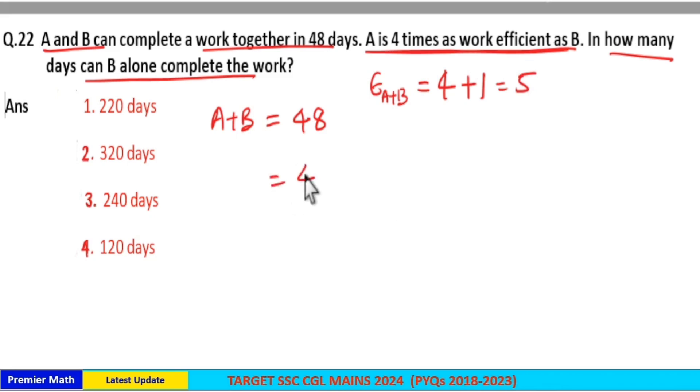Then in 48 days A and B together complete 48 into 5 units of work, which is equal to 240 units of work. So 240 units of work is the total work completed by A and B.